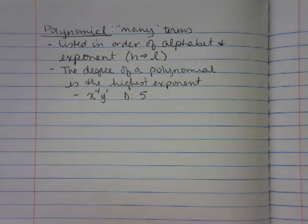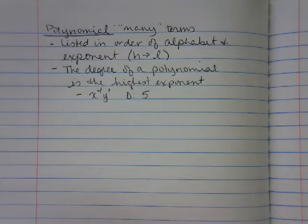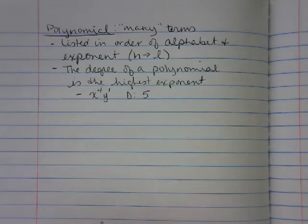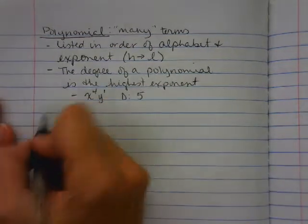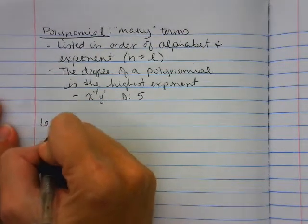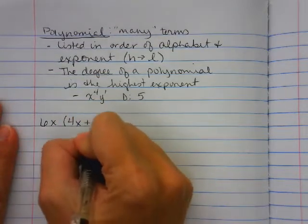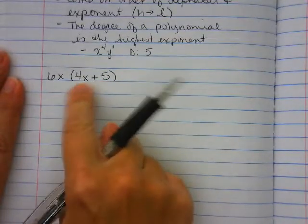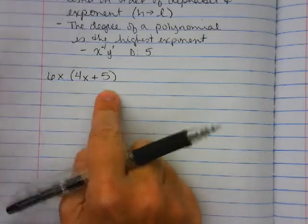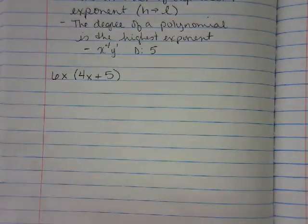So let's look at multiplying polynomials. We've already talked about adding and subtracting. Sometimes we have a monomial times a binomial. So we have one term times a two-term. Remember, this is still a binomial because there are two terms even though one of them is a constant. And this should look very familiar because this is simply going to be distributing.